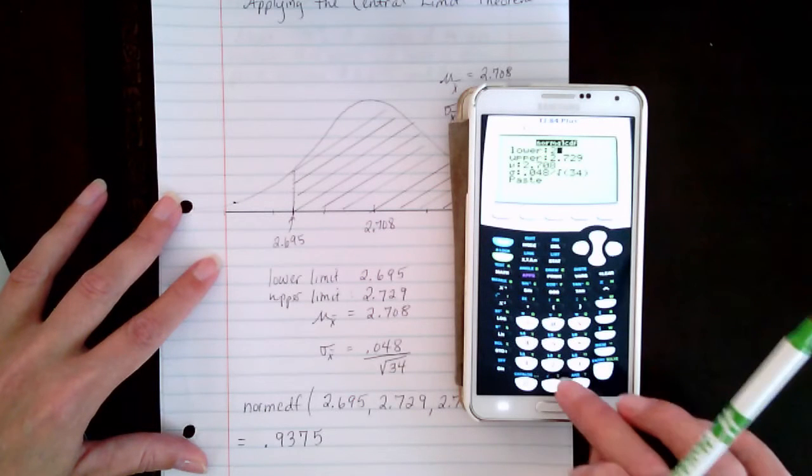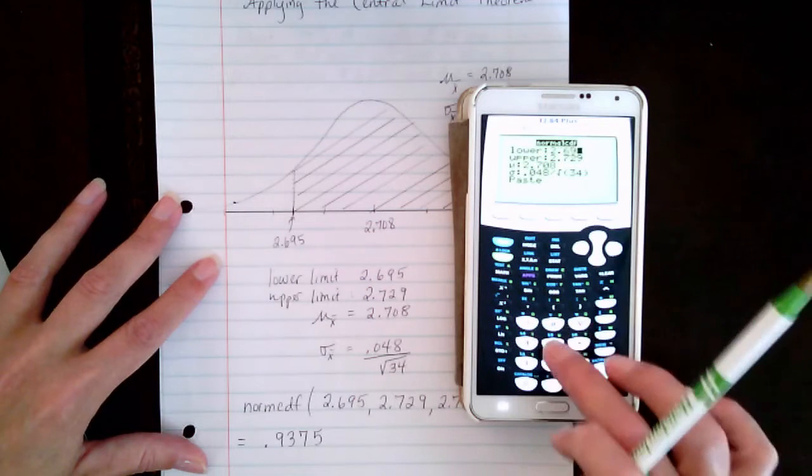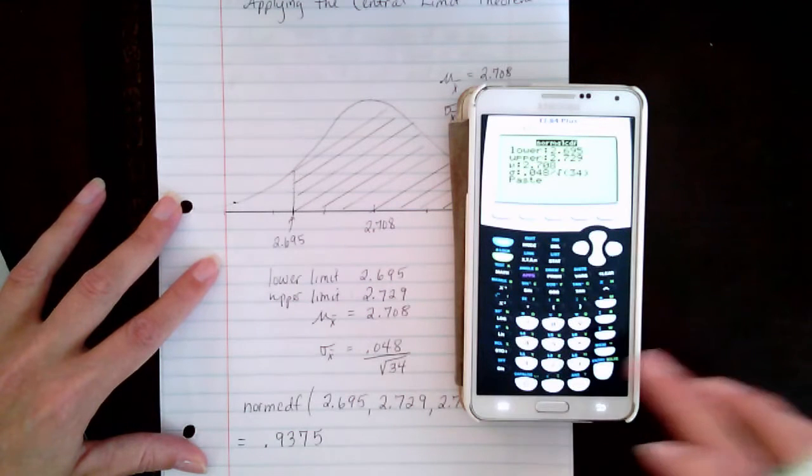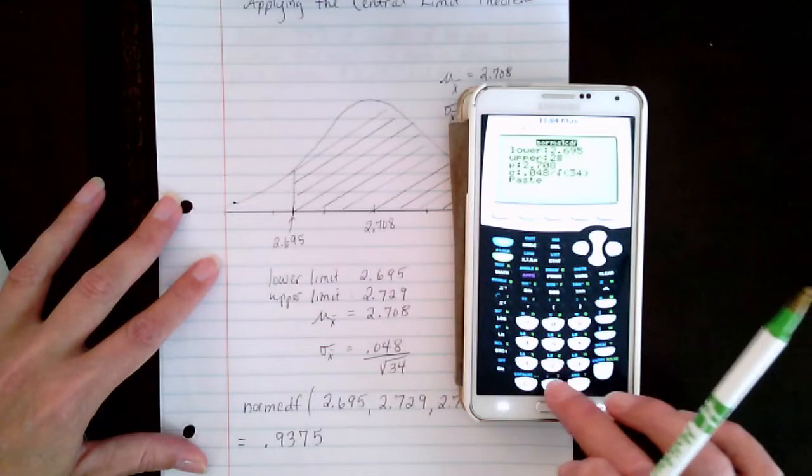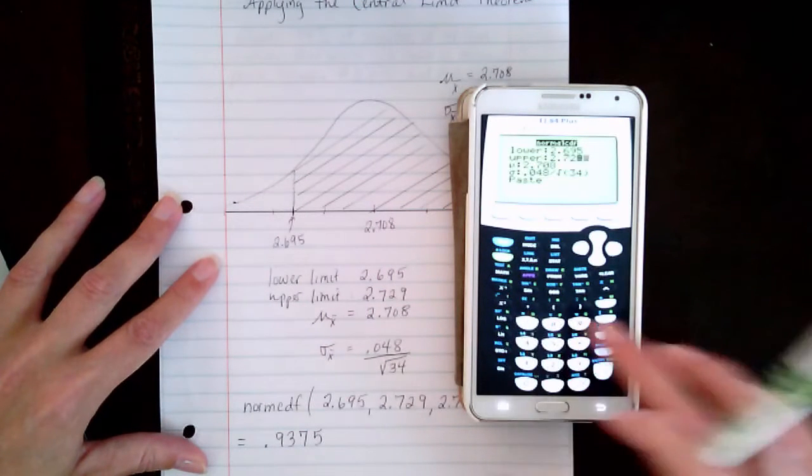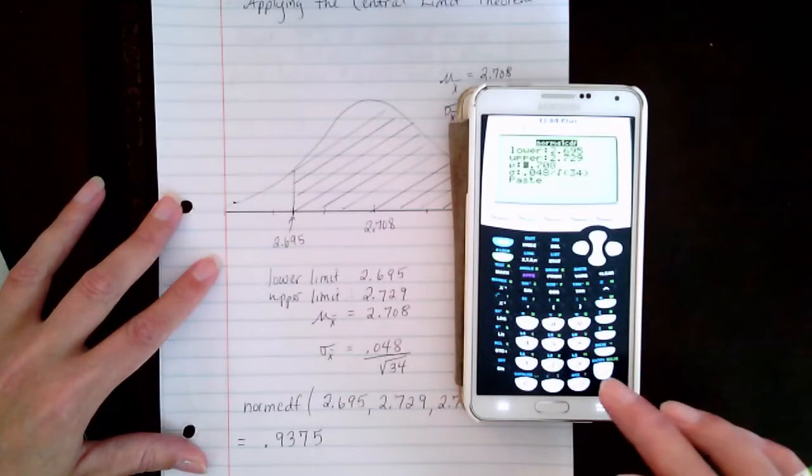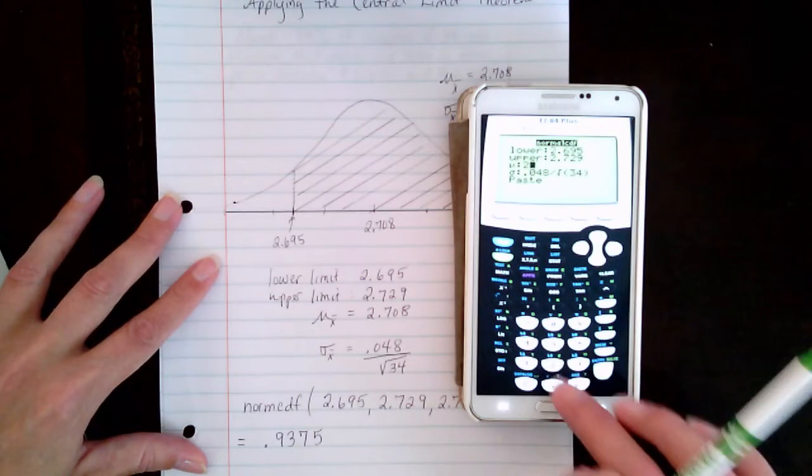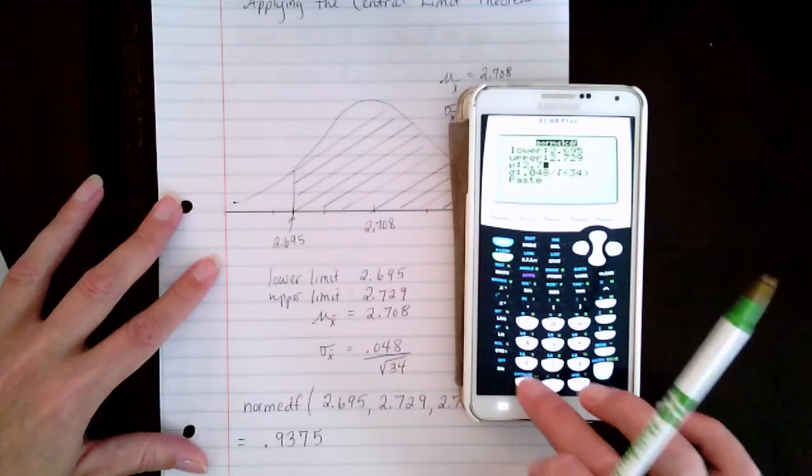The lower limit is 2.695. The upper limit is 2.729. The mean is 2.708.